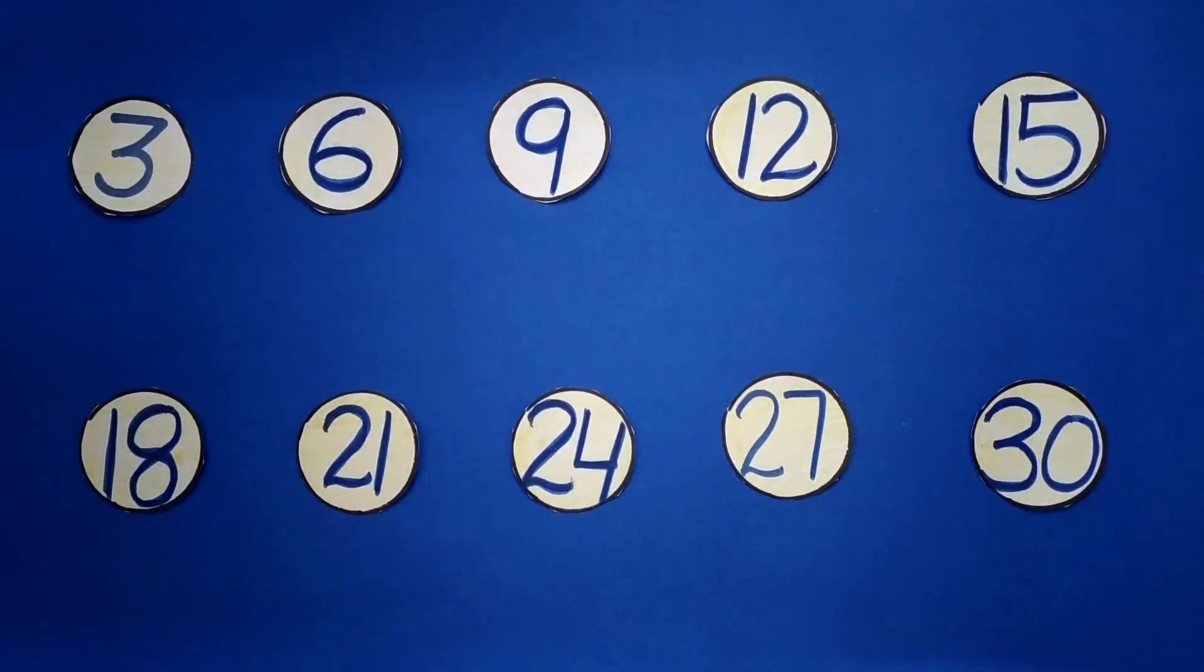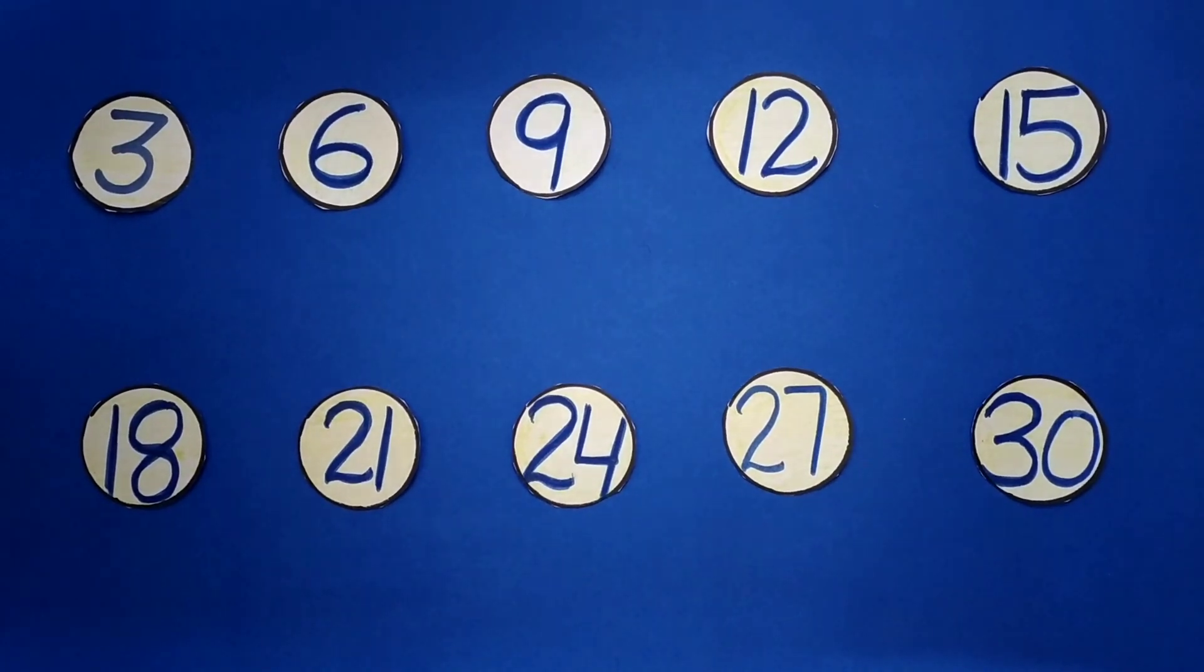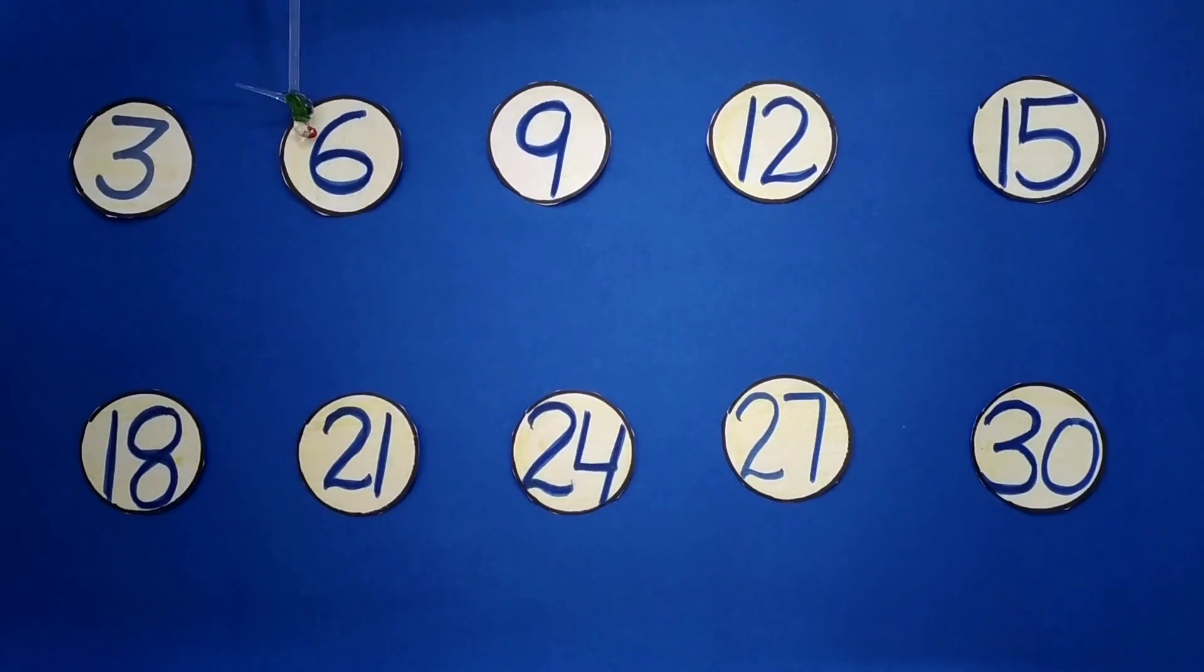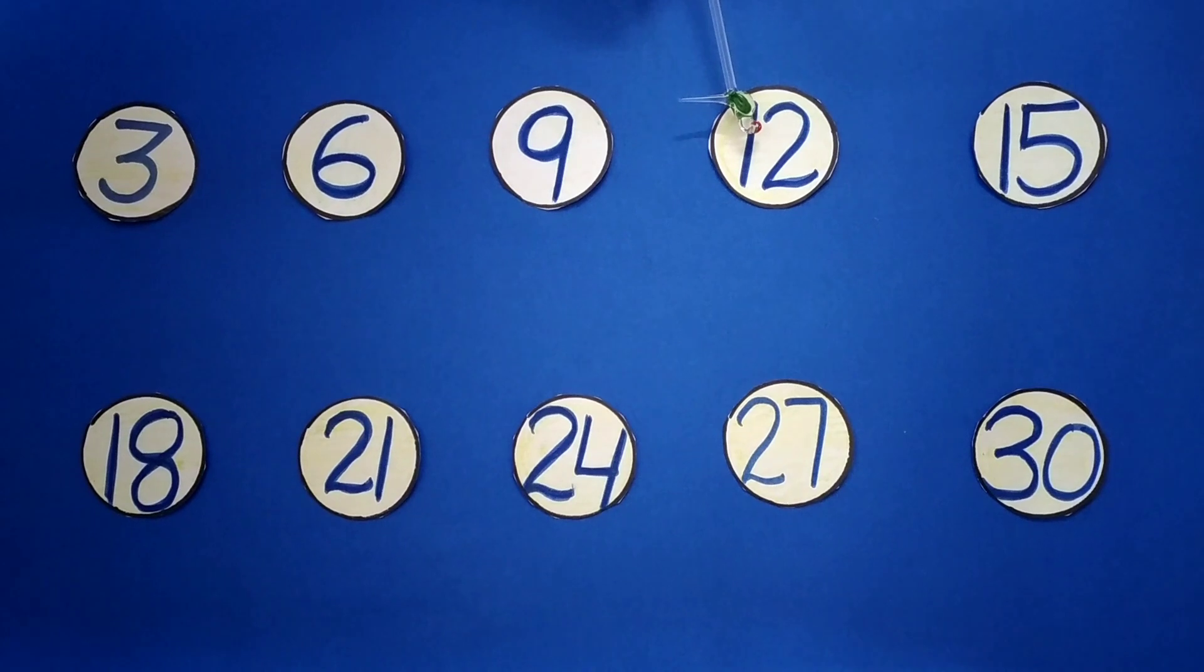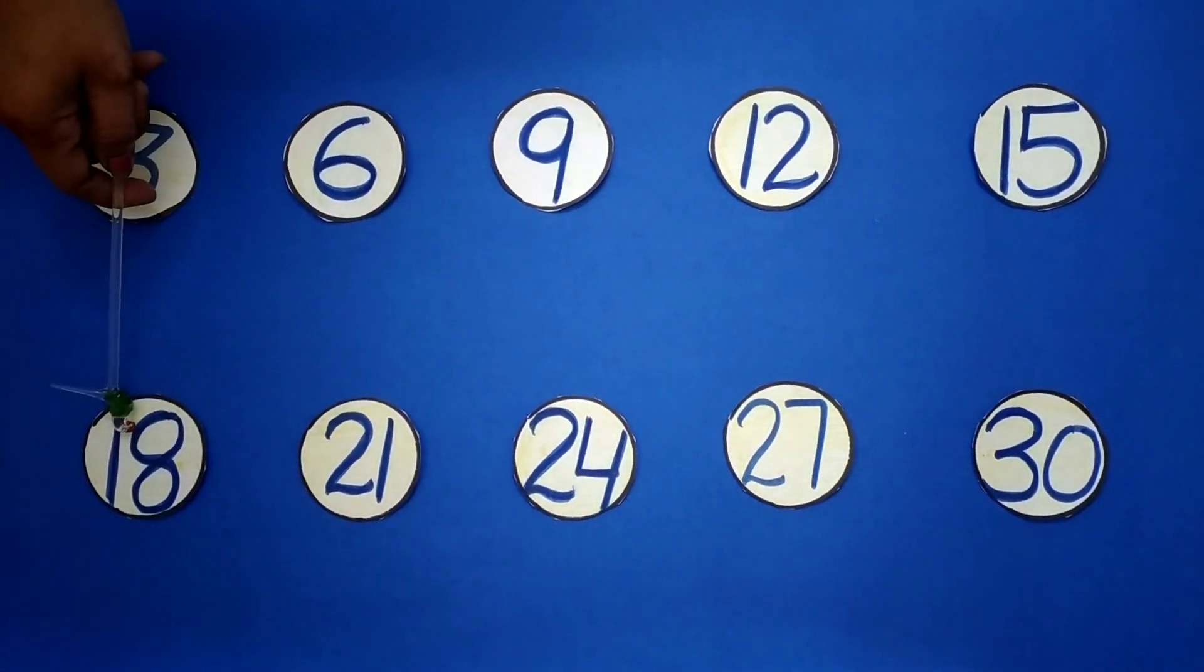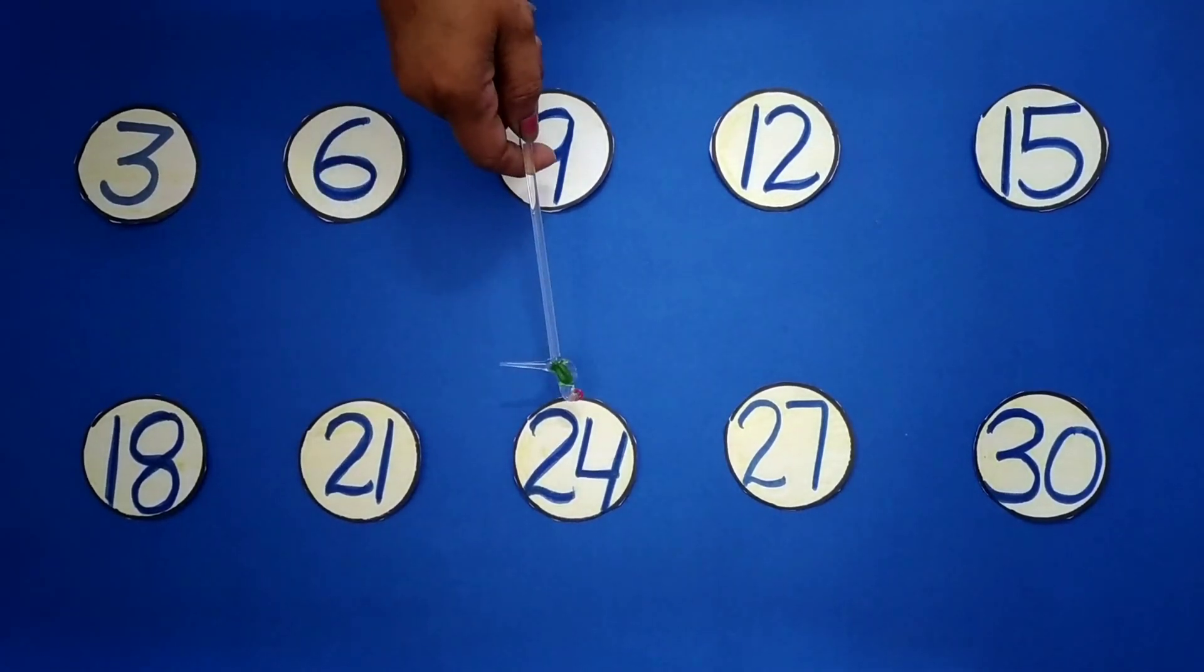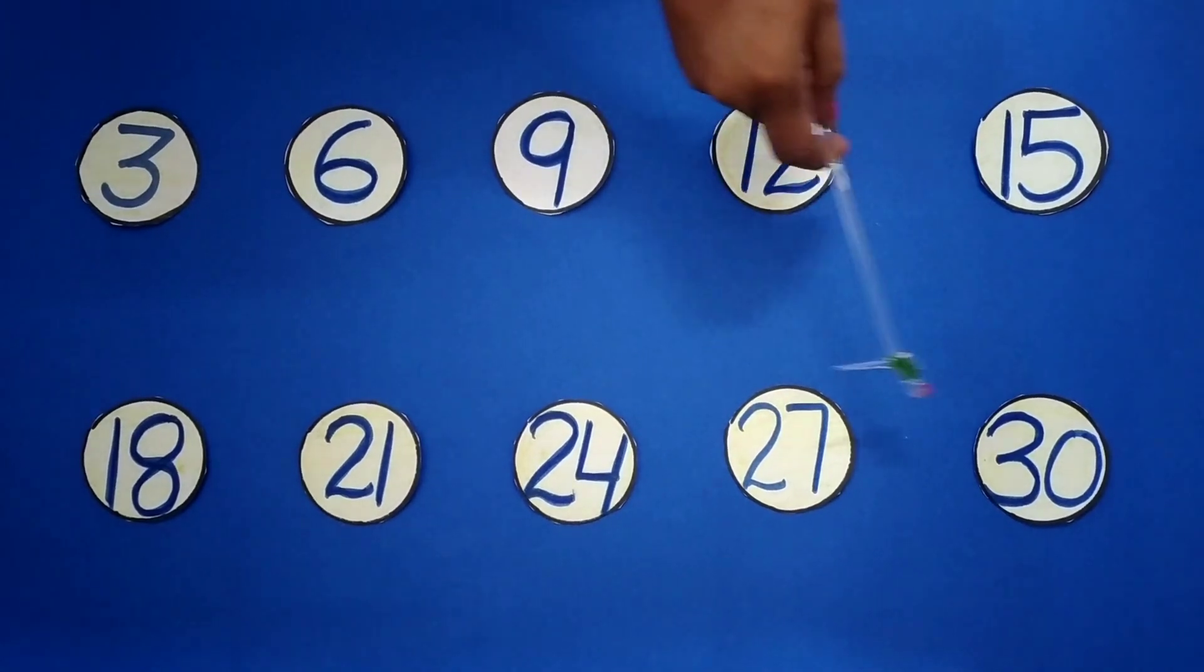Let's see again on which numbers teddy jumps: 3, 6, 9, 12, 15, 18, 21, 24, 27, 30.